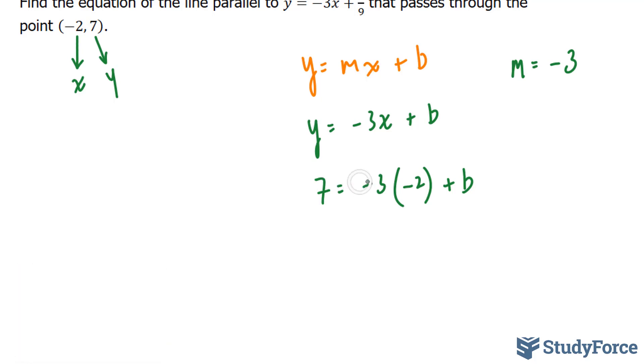So let's go ahead and evaluate the right side here. Evaluate means to multiply it out. What we have is negative 3 times negative 2, which equals positive 6 plus b. And on the left side, you have 7.